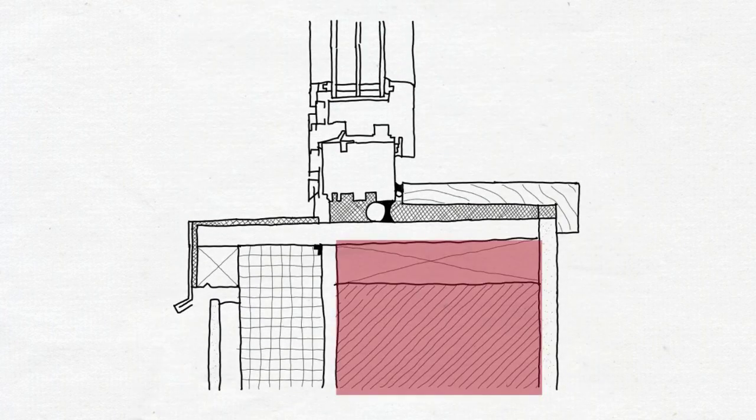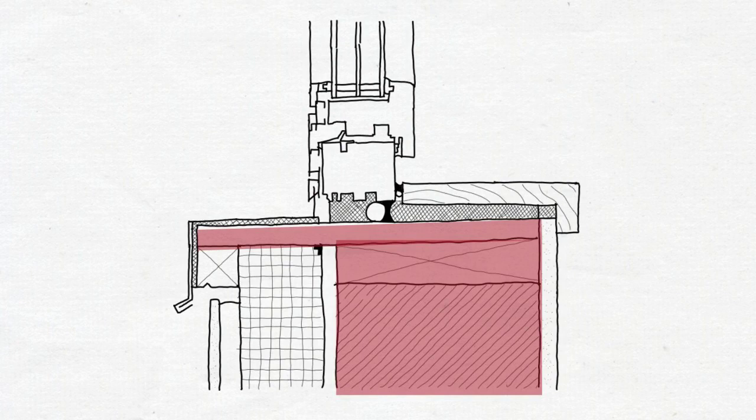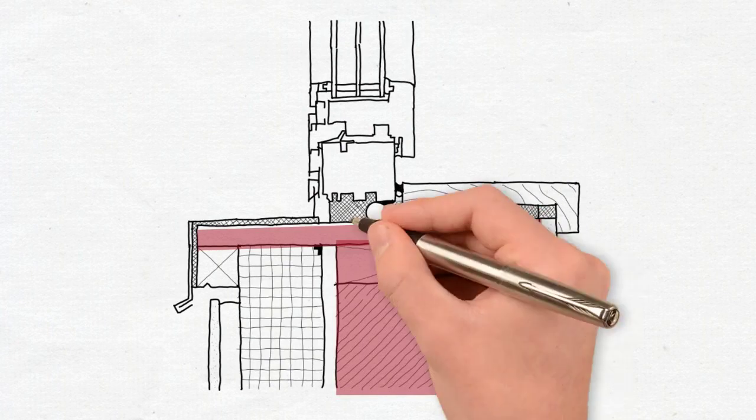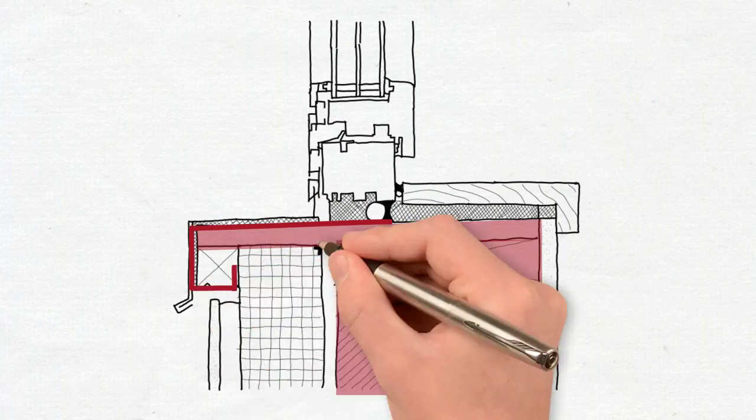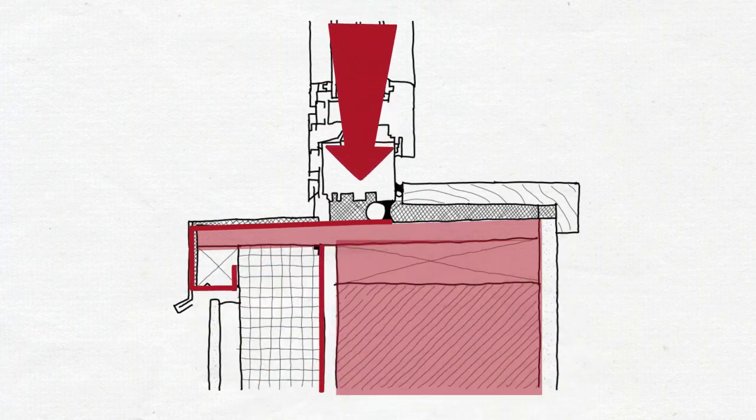For the air barrier we first frame the wall and then we install the seal which is made out of pre-manufactured plywood. Next we are installing fluid applied WRB. Then we install the window, then the sealant and then the air barrier is complete and ready for test.